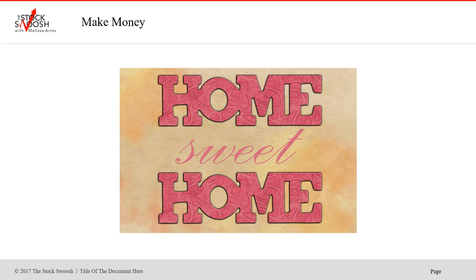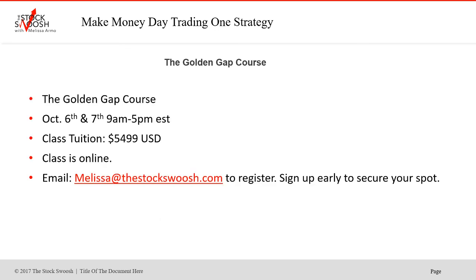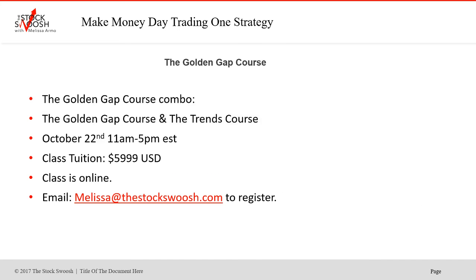The nice thing about trading is you can work from home, and the hours aren't full-time — it's not a 40-hour-a-week job. I teach a class once a month called the Golden Gap course. It is October 6th and 7th, 9 to 5 Eastern time, held online. The cost is $5,499, but the price is increasing with the new website launch — this is the last class at this price. If you've been considering it, sign up and get in during earnings season, which starts this coming week.